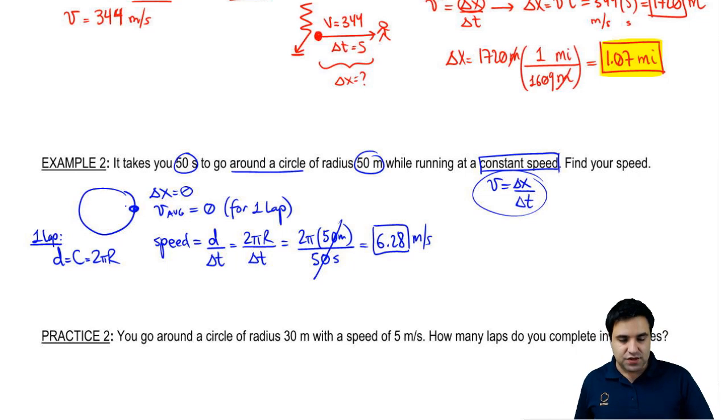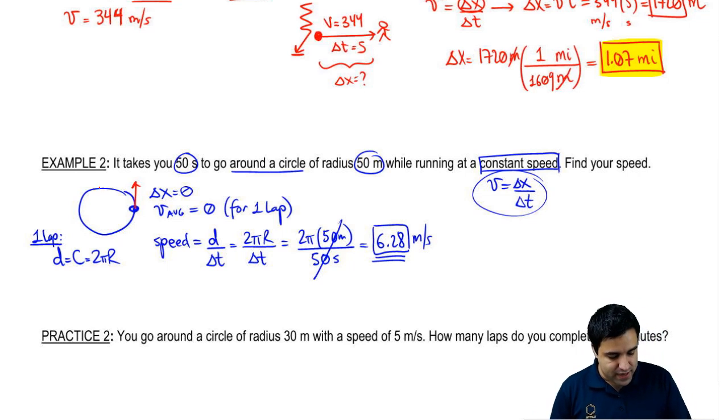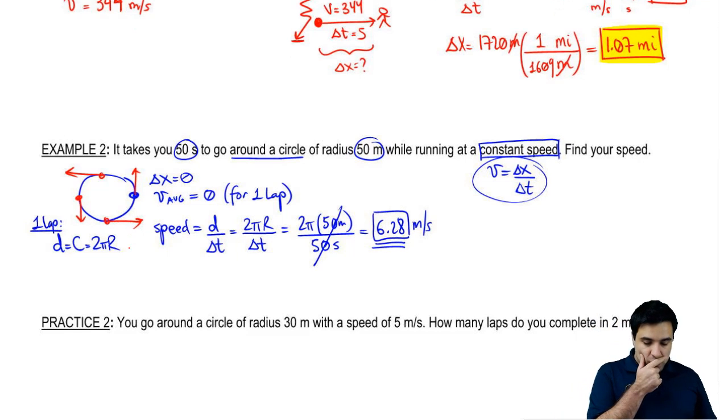Again, it's speed. They're just looking for the magnitude. Velocity, the average velocity is zero because you're back at the same place. But your speed, you're always running with 6. It's just that you're running with 6 this way. Then you're running with 6 this way. Then you're running with 6 this way. Then you're running with 6 this way.